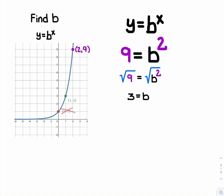Normally, when you take the square root of both sides, you get both positive and negative. But remember, by definition, in an exponential function, that b value must be positive.